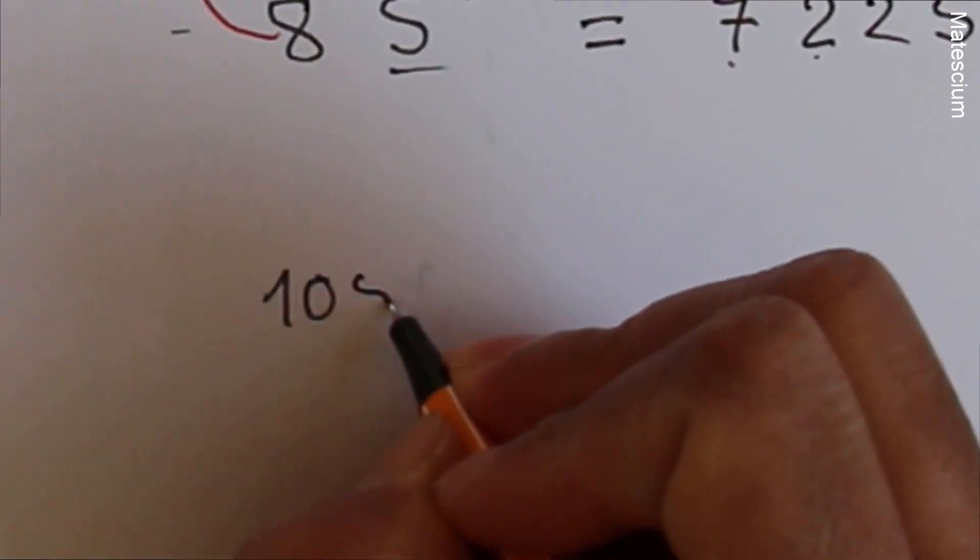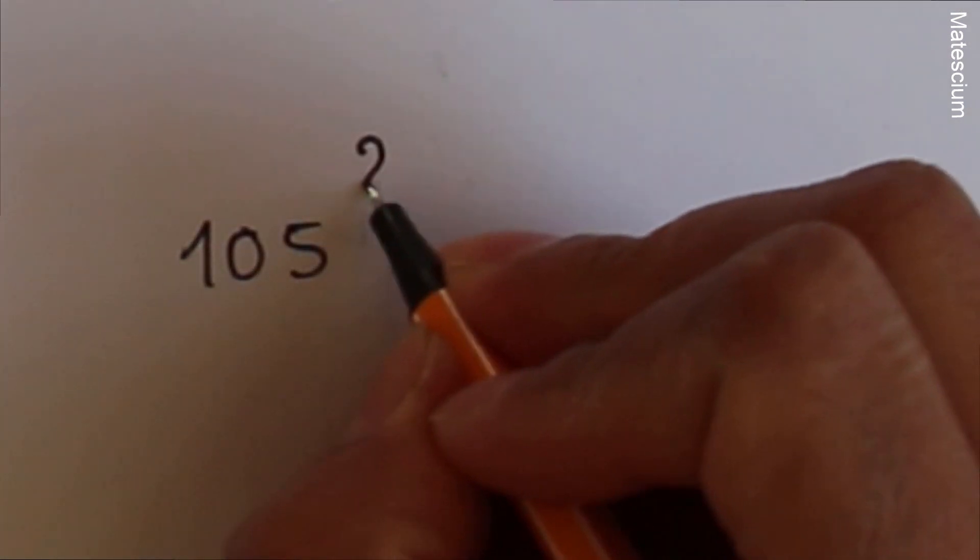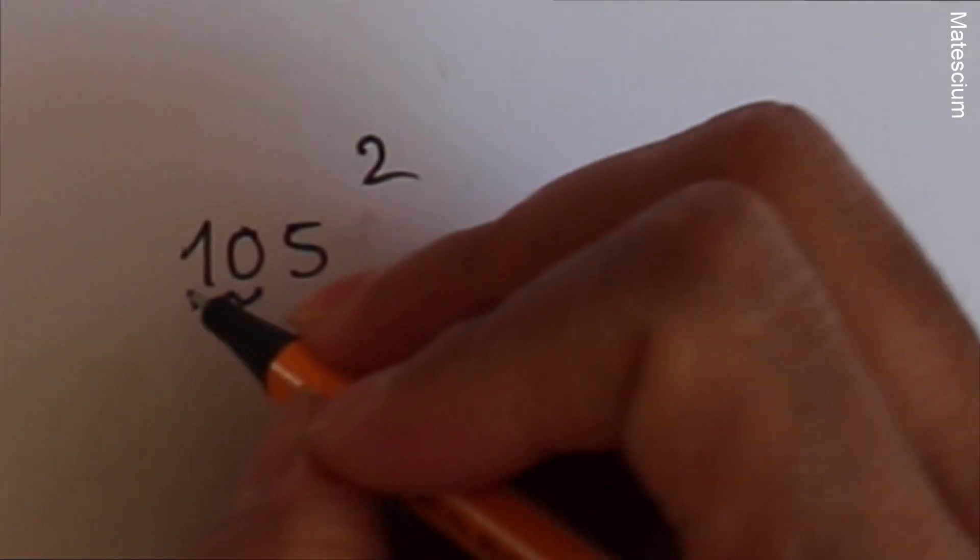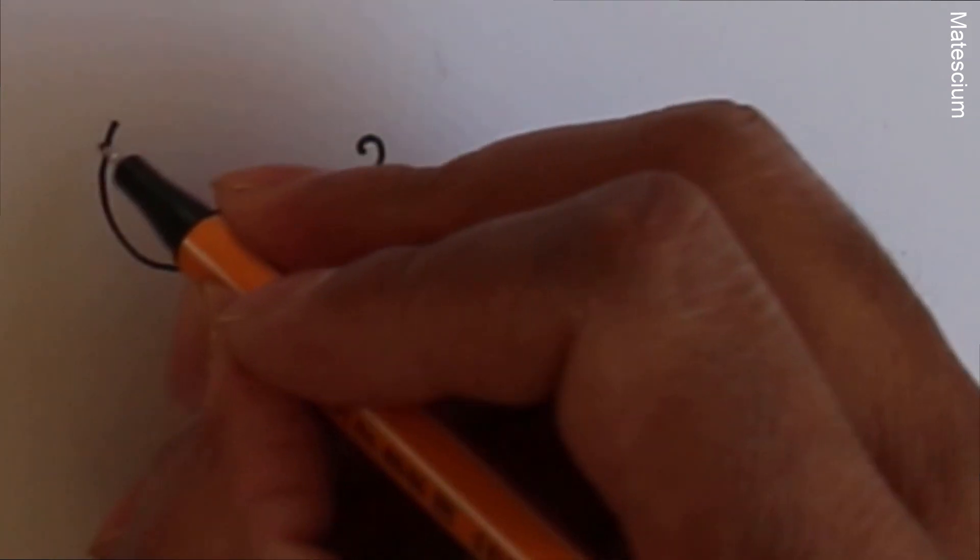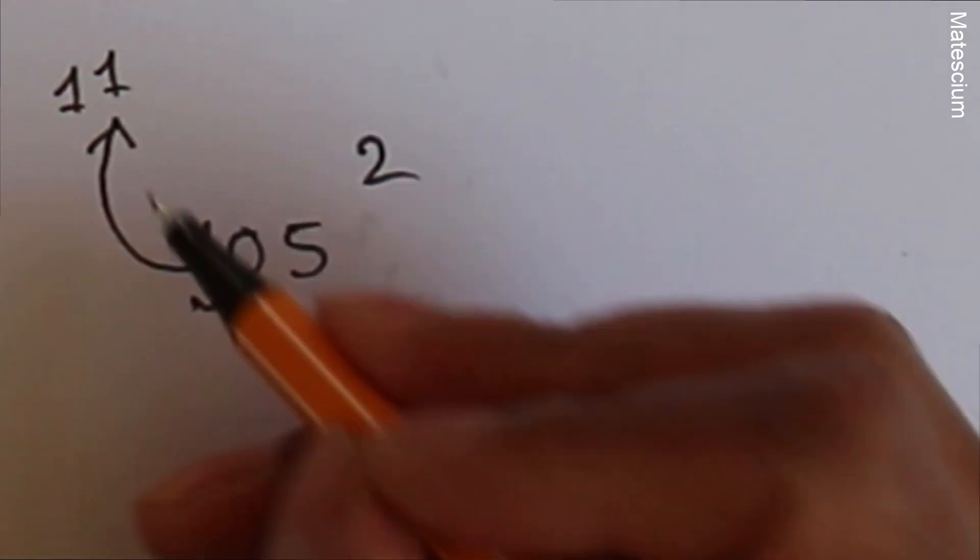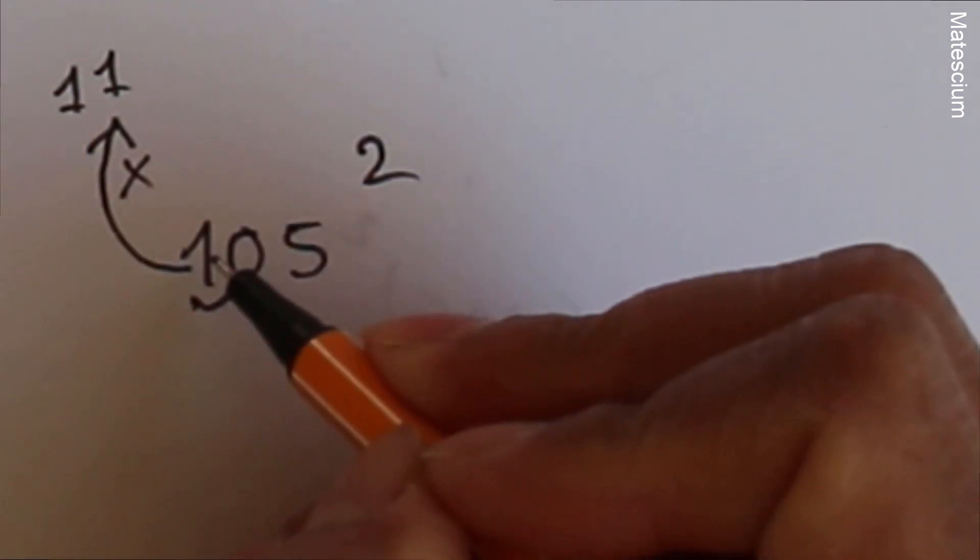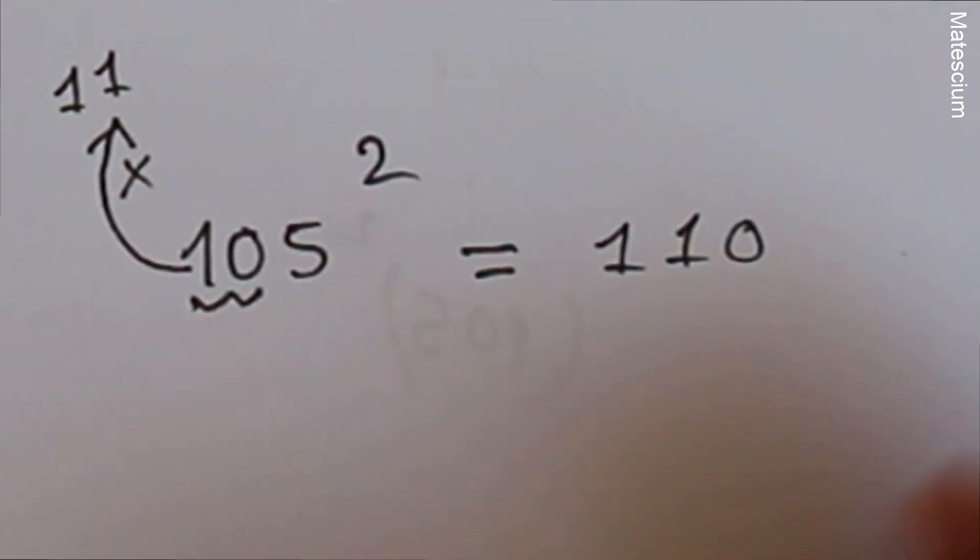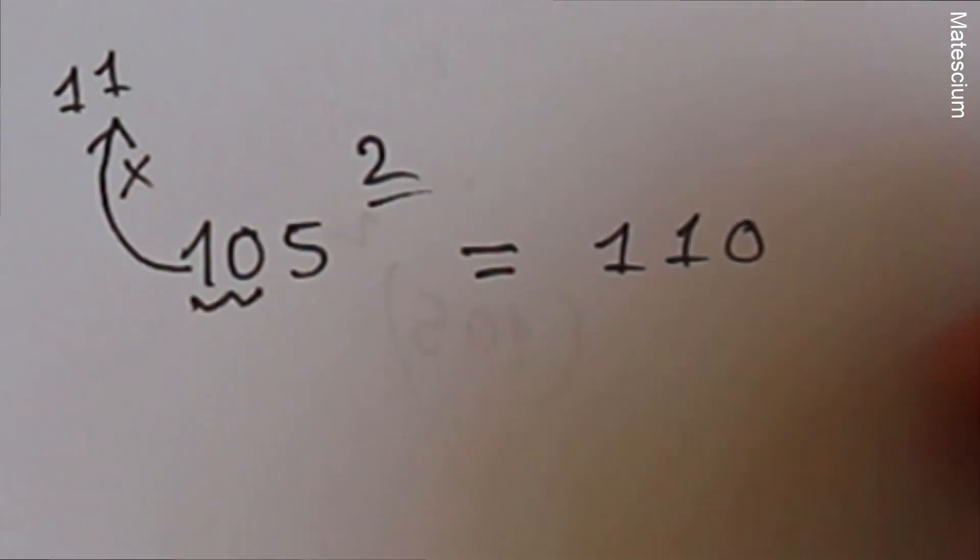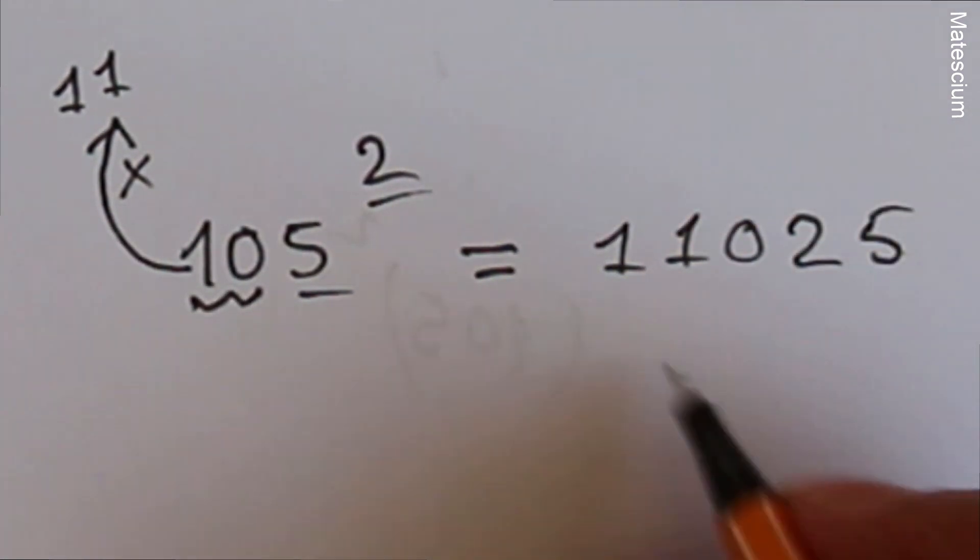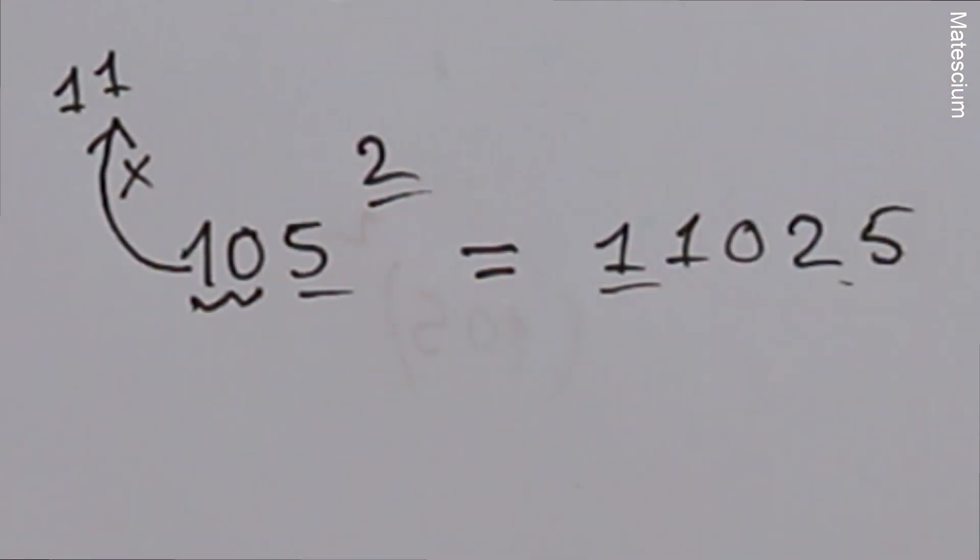105². What we have to do: let us consider this 10 as one number. And we have to imagine the immediate next number which is 11. Then multiply 11 by 10. 11 times 10 is 110. And very simple: write 5² as 25 here. That means 11,025 is the answer.